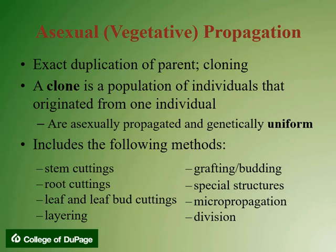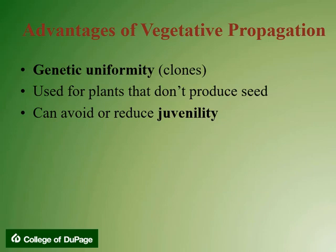Asexual reproduction is required to produce clones or exact duplicates of plants that are sterile or plants that are difficult to grow from seed. Asexual propagation includes methods such as stem cuttings, root cuttings, leaf and leaf bud cuttings, layering, grafting, budding, special structures, micropropagation, as well as division. Vegetative propagation has many advantages, including genetic uniformity or clones. They are used for plants that do not produce seed, and you can avoid or reduce juvenility with vegetative propagation methods.